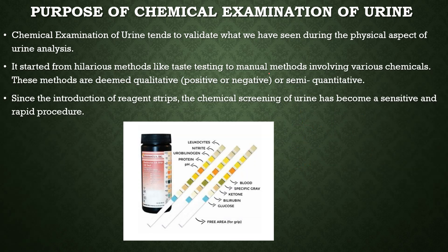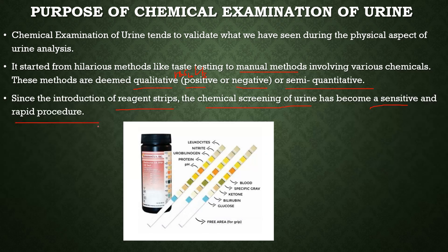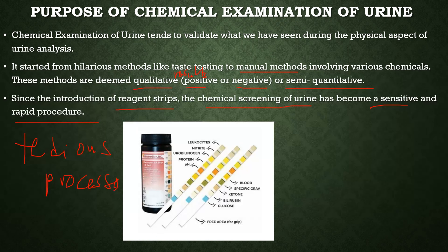Chemical examination usually involves manual methods using various chemicals. These methods are qualitative — results are either positive or negative, or show a semi-quantitative result. The most used material in chemical examination of urine is the reagent strip. Reagent strips allow chemical screening of urine to become a sensitive and rapid procedure, because previously the processes were very tedious. When the reagent strip was introduced, results are available in minutes.